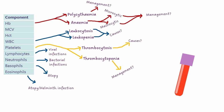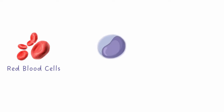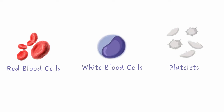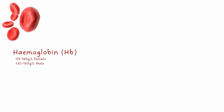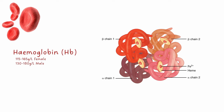The full blood count essentially tests the cells in our blood, which can broadly be categorised into red blood cells, white blood cells, and platelets. There are three measurements taken from red blood cells that we can interpret. Firstly, haemoglobin, which is the iron-containing protein found inside red cells that allows them to carry oxygen.